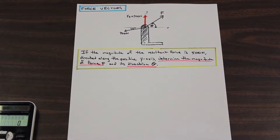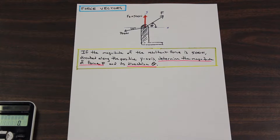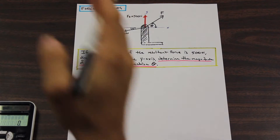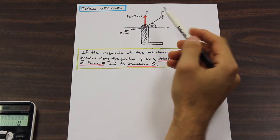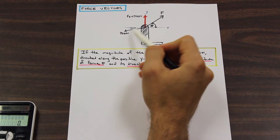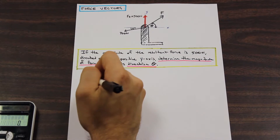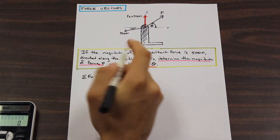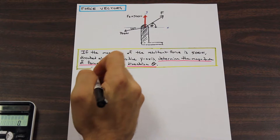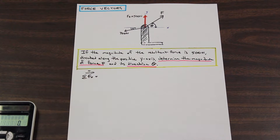Pretty much like every equilibrium vector problem, we're going to write a series of equations. This is a 2D question, so we're going to write some of the forces in x and some in y — if it were 3D there would be a z component, but it's not. Let's start with the x components of this diagram. We're going to look at each vector, see if it has an x component, and include it. The sum of the forces in x — and we're going to say right is our positive direction.